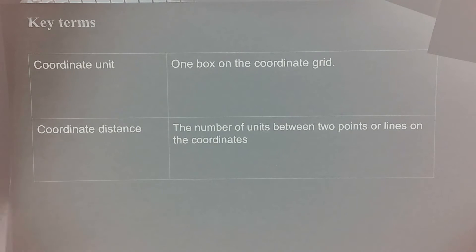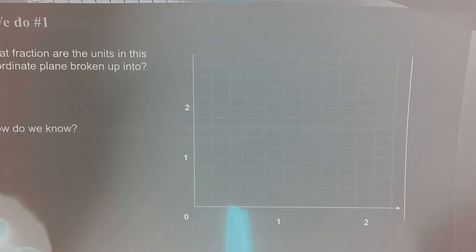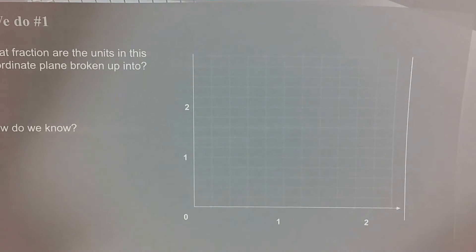Coordinate unit, we talked a little bit about yesterday, is one box on the coordinate grid. So no matter what our coordinates are labeled, every single line or box on the coordinate grid is just one unit.